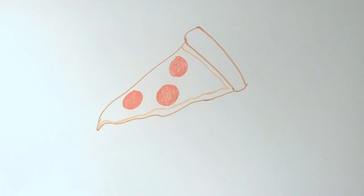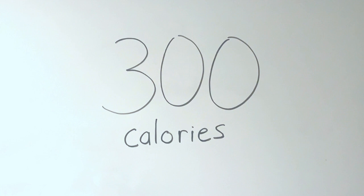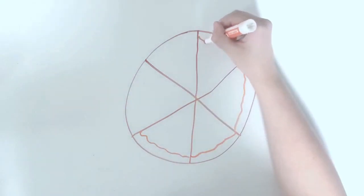Let's say that the serving size for pizza is one slice. And that one slice contains 300 calories. But what if you were really hungry and ate six slices of pizza?